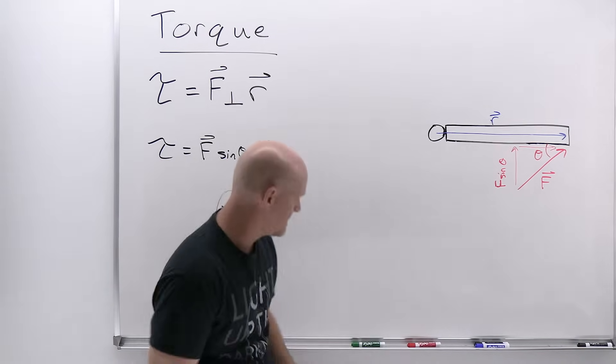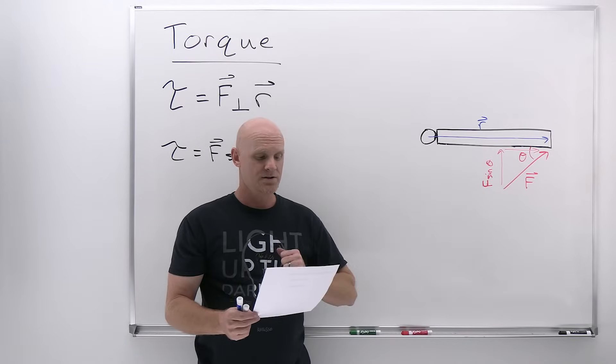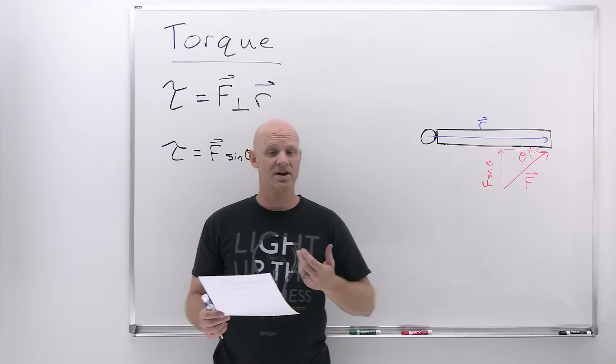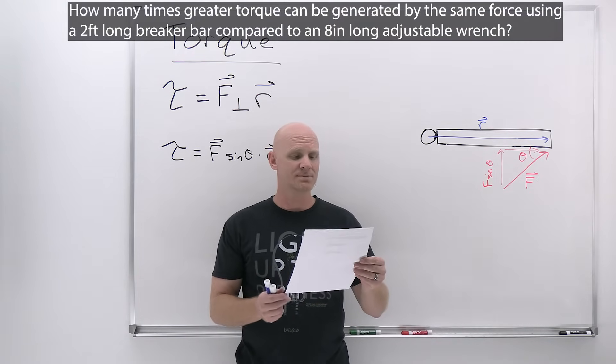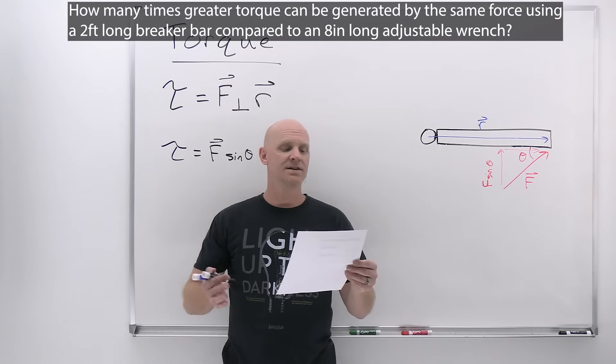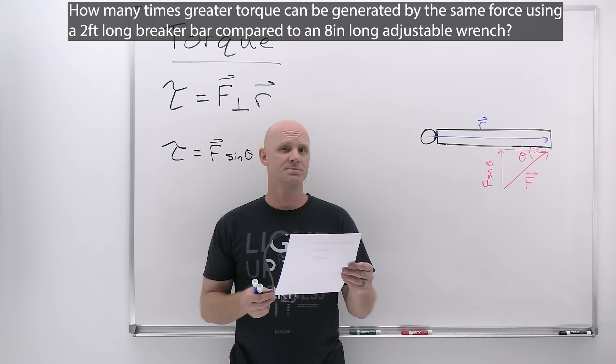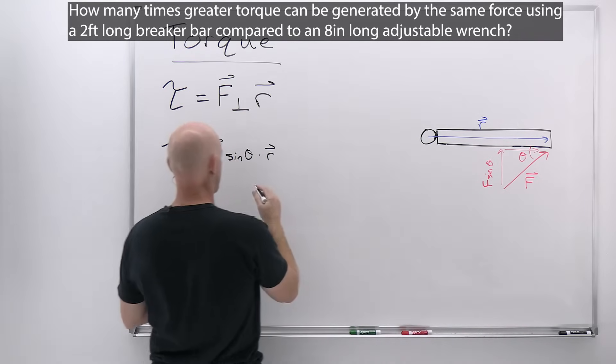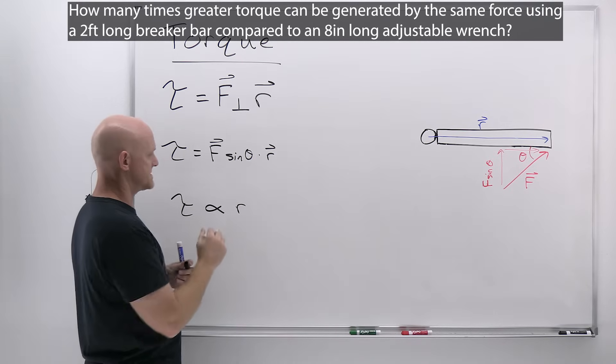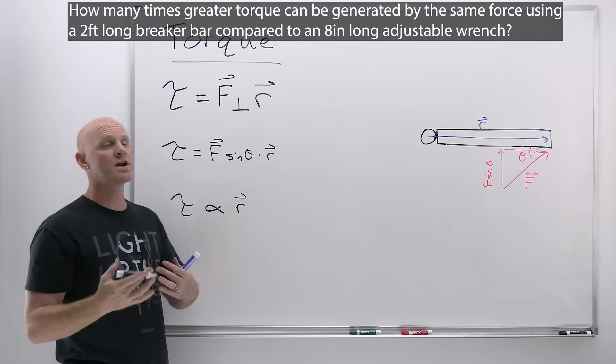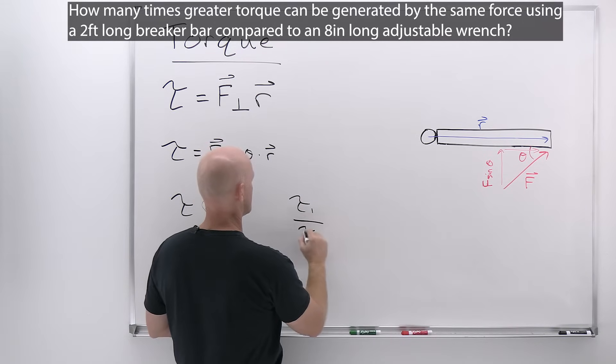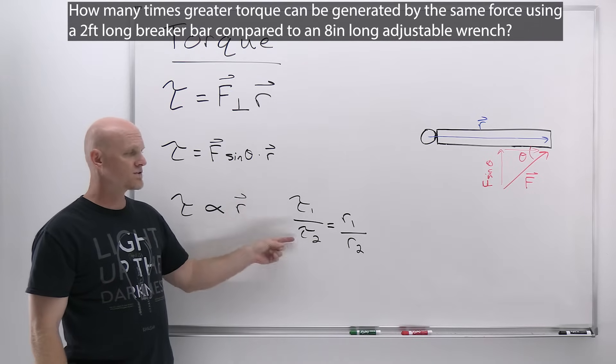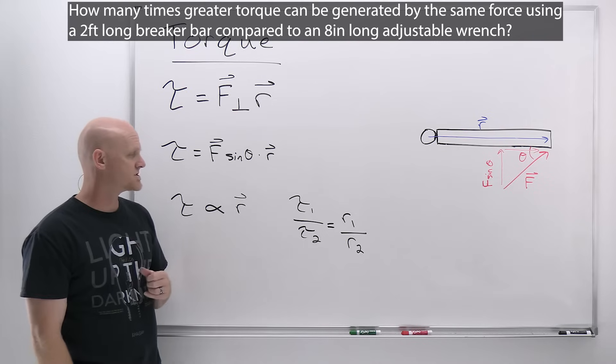Let's take a look at some problems in the context of the wrench. I have exactly a two-foot breaker bar and an exactly eight-inch adjustable wrench. First question says, how many times greater torque can be generated by the same force using a two-foot-long breaker bar compared to an eight-inch-long adjustable wrench? If we look at the equation, we can see that torque is proportional to that lever arm distance. Because they're proportional, we can set up a proportion. Torque one over torque two equals lever arm one over lever arm two.